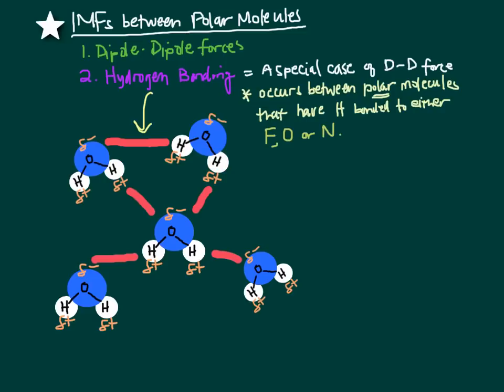...those hydrogens have their electrons pulled away from them in a really polar bond inside that molecule, which makes the hydrogens not only slightly positive, but almost ionically positive — as positive as those hydrogens are ever going to get in any molecule. That makes the force of attraction between the hydrogen in one molecule and the slightly negative end of another — that hydrogen bond — a very strong dipole-dipole bond.